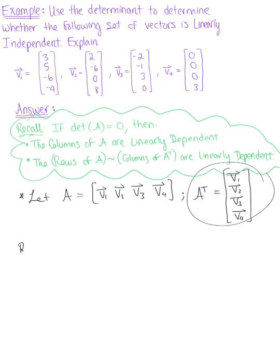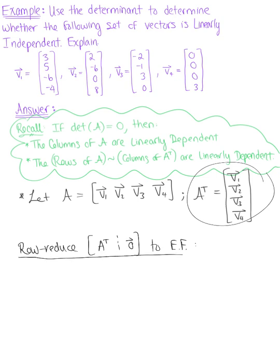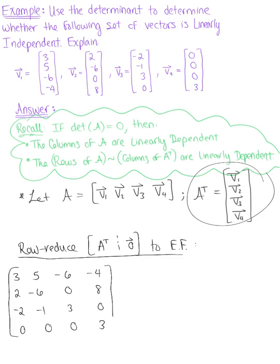We are going to row reduce A transpose augmented with the zero vector to echelon form to compute our determinant. Using A transpose, our first row is 3, 5, negative 6, negative 4. Our second row is 2, negative 6, 0, 8. Row 3 is negative 2, negative 1, 3, 0. And our fourth row is 0, 0, 0, 3. We are augmenting this with the zero vector.